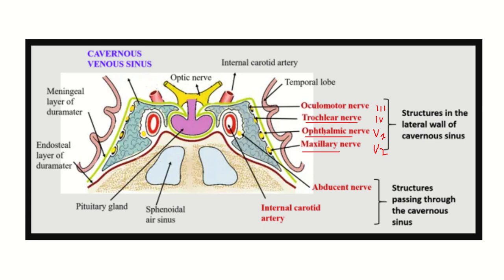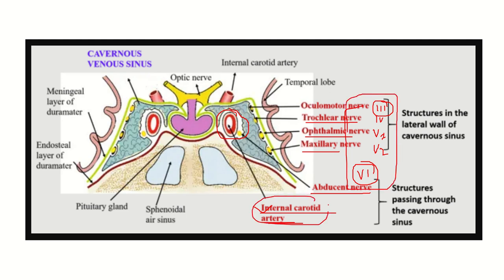Within the cavernous sinus itself there are two important structures. One is the internal carotid artery, which provides blood supply to the brain. The other is the abducent nerve, which is cranial nerve number six. So from cranial nerve three to six — CN III, CN IV, CN V, and CN VI — these nerves are located in relation to the cavernous sinus, along with the internal carotid artery.